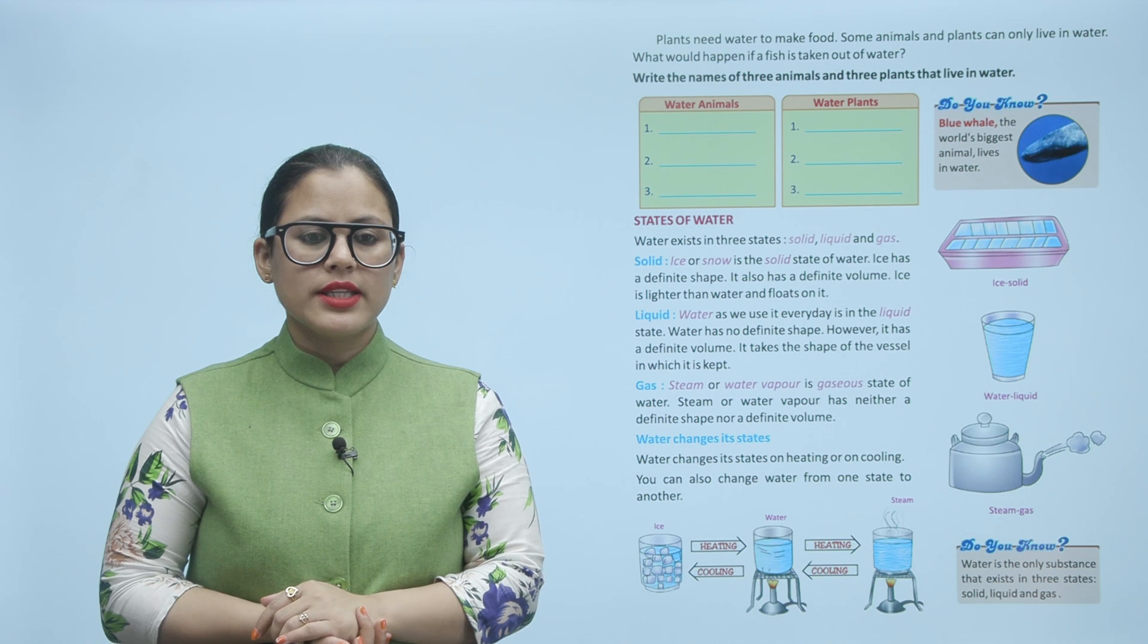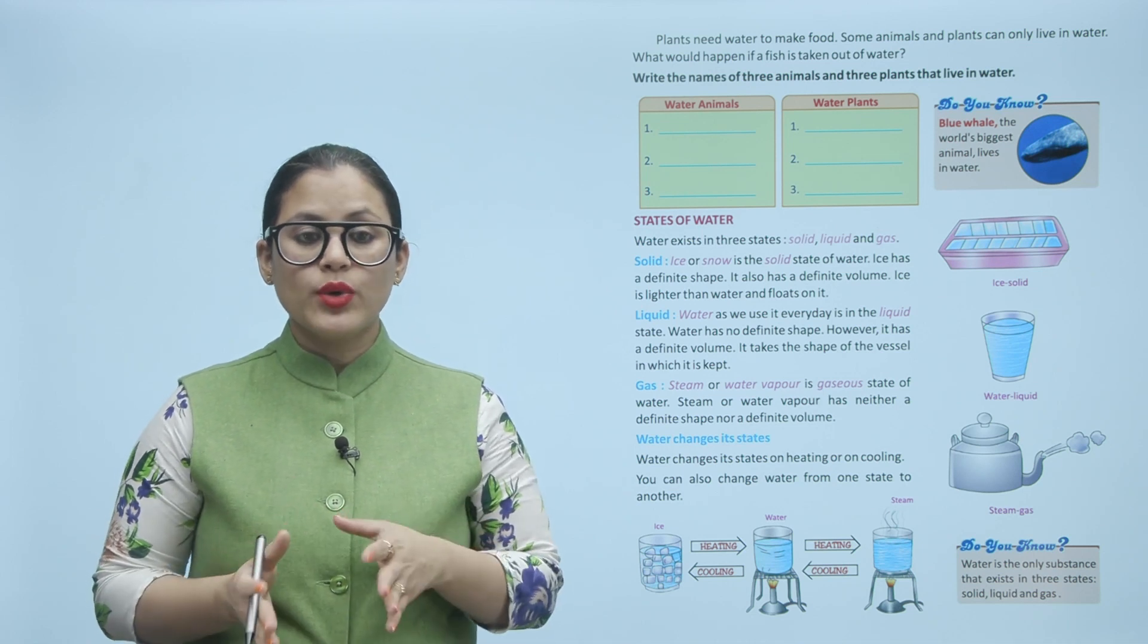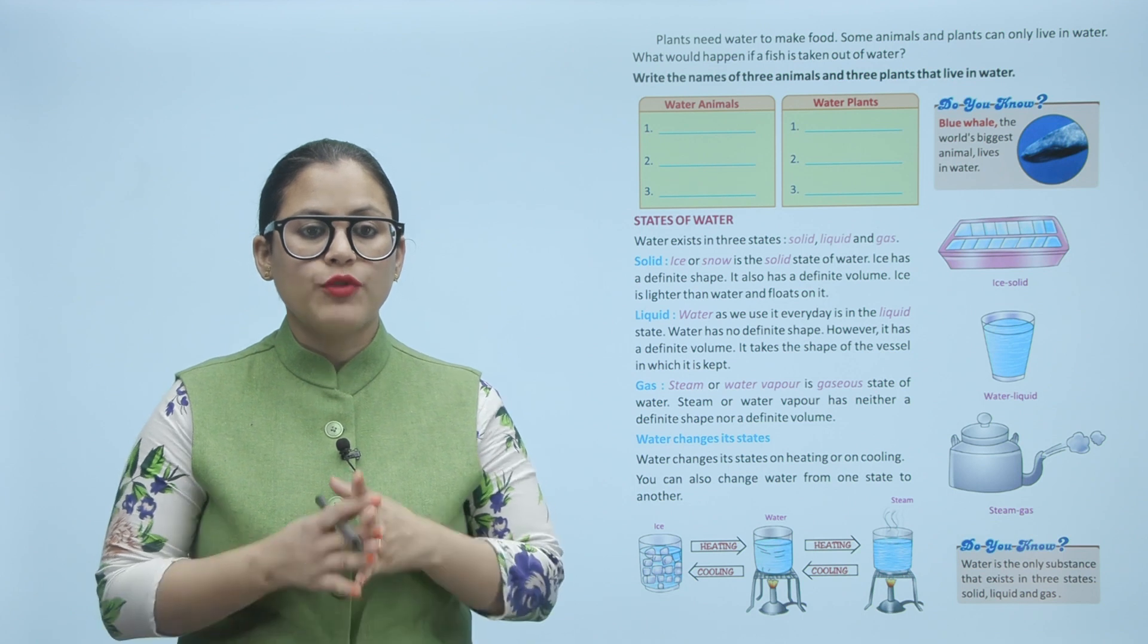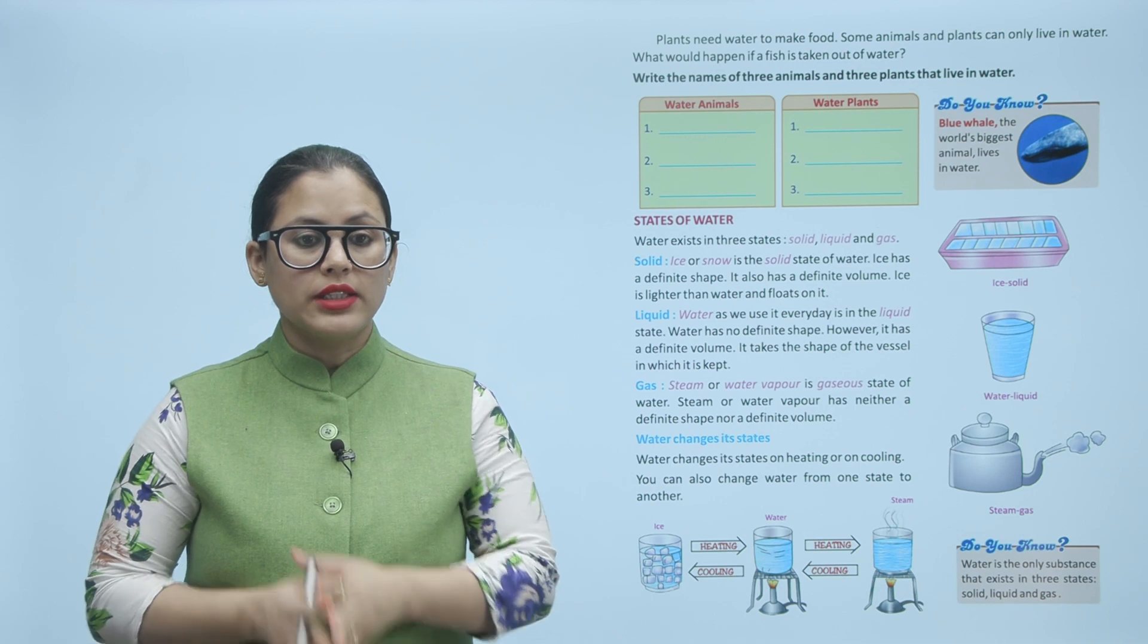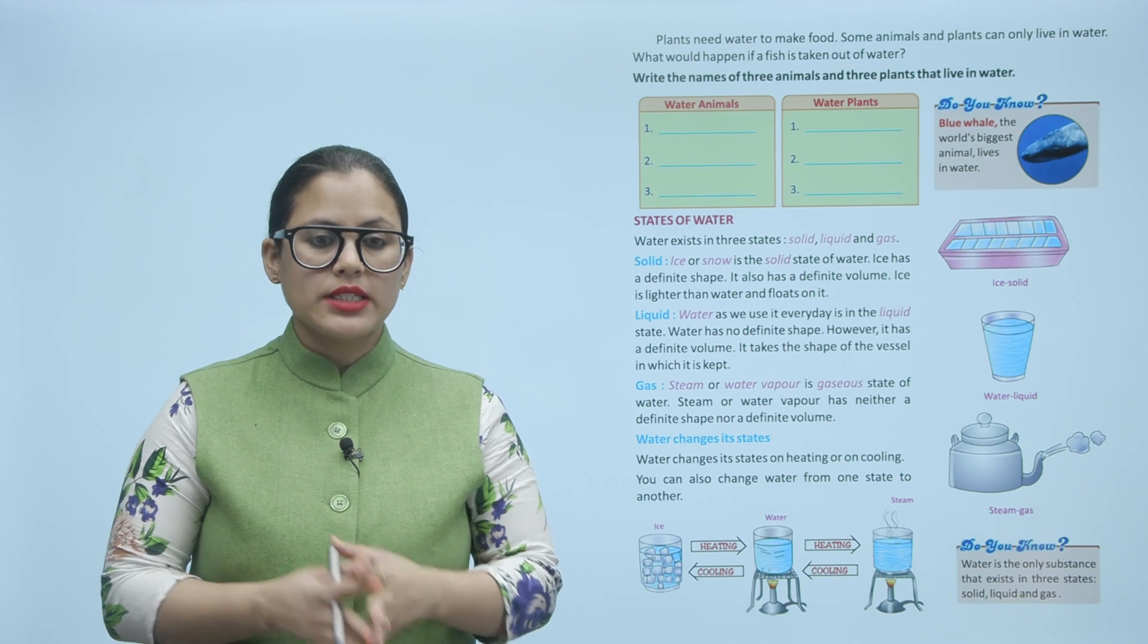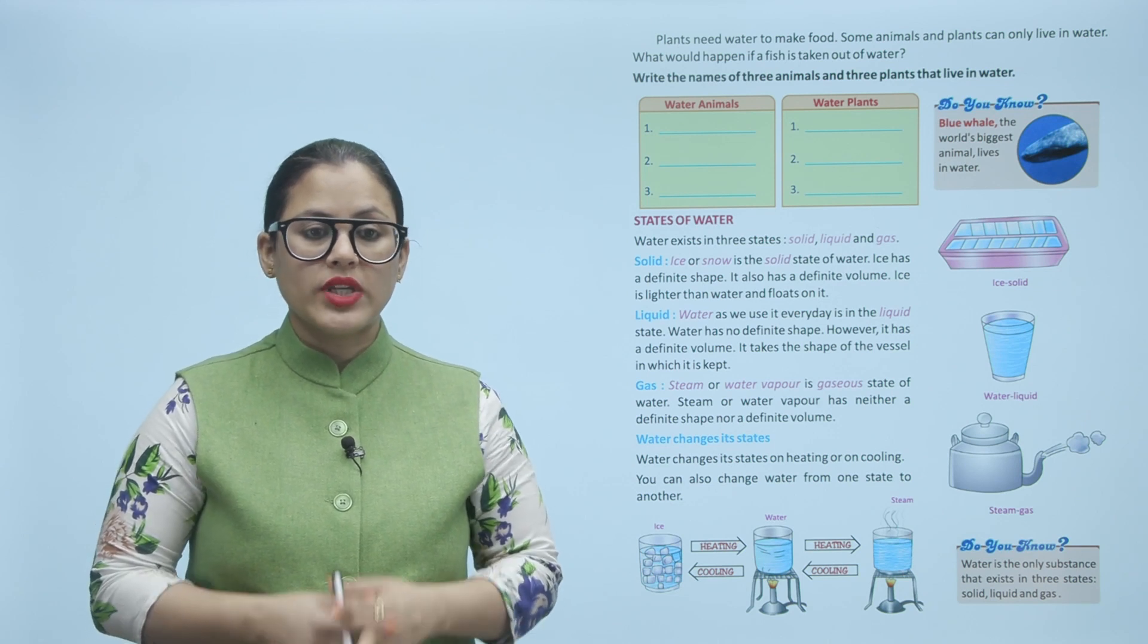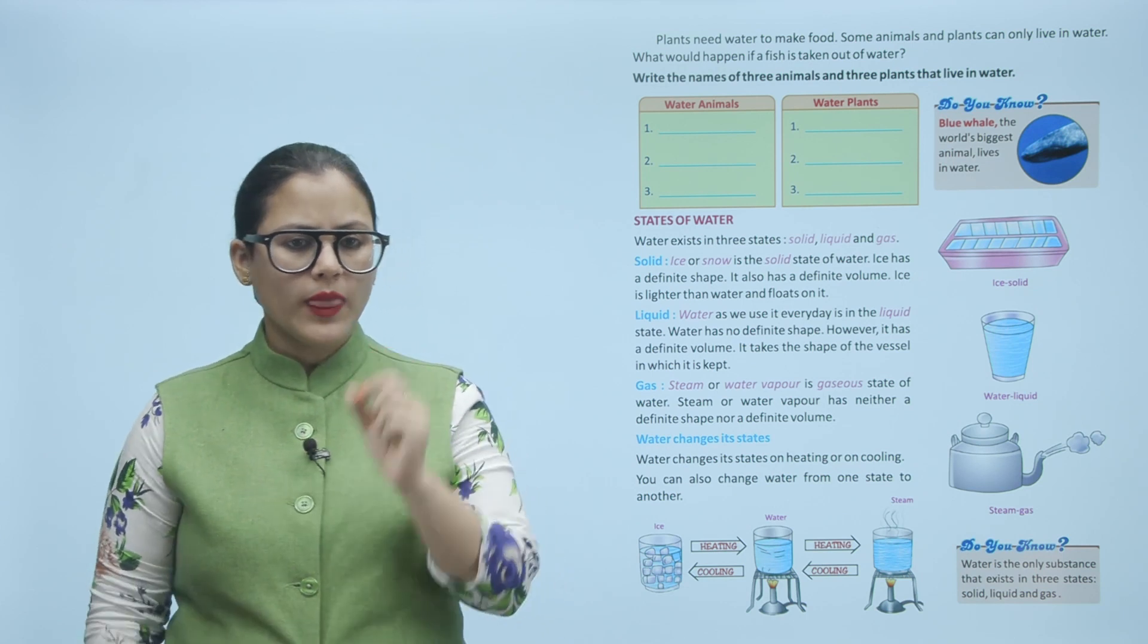States of water. Water exists in three states: solid, liquid and gas. Solid: Ice or snow is a solid state of water. Ice has a definite shape and a definite volume. Ice is lighter than water and floats on it. Liquid: Water, as we use it everyday, is in the liquid state. Water has no definite shape. However, it has a definite volume. It takes the shape of the vessel in which it is kept. Gas: Steam or water vapor is gaseous state of water. Steam or water vapor has neither a definite shape nor a definite volume.